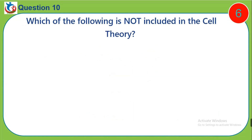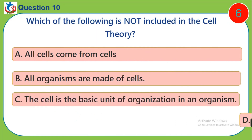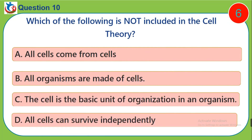Question 10. Which of the following is not included in the cell theory? A. All cells come from cells. B. All organisms are made of cells. C. The cell is the basic unit of organization in an organism. D. All cells can survive independently.